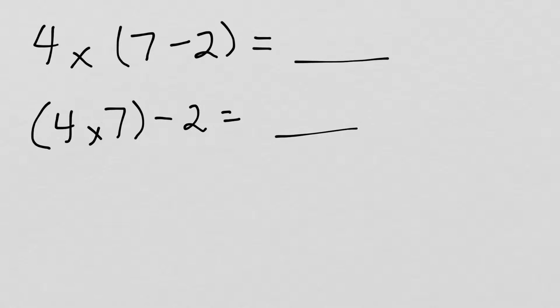The first one was using parentheses. The parentheses in a problem tell us what to do first. In this problem, we are going to solve 7 minus 2 before we do the times 4 part, compared to this one, where 4 times 7 is the first step, and then minus 2 follows.